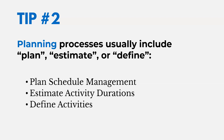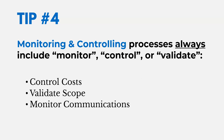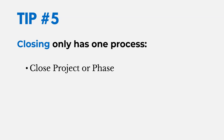The second tip: planning processes usually include words like plan, estimate, or define — for example, plan schedule management, estimate activity durations, and define activities. Third tip: executing processes usually include manage, conduct, or acquire — like direct and manage project work, conduct procurements, acquire resources. Fourth tip: monitoring and controlling processes always include monitor, control, or validate — like control costs, validate scope, and monitor communications. Fifth tip: closing only has one process — close project or phase.